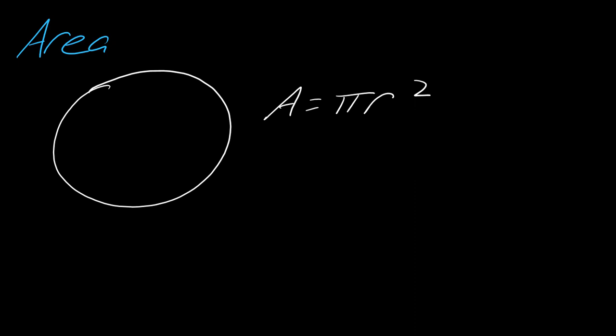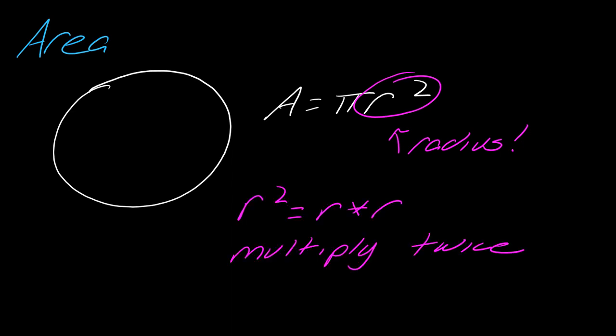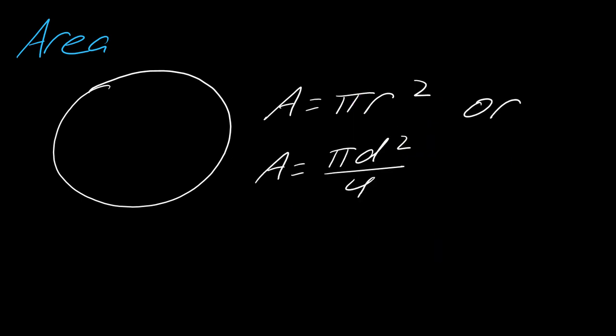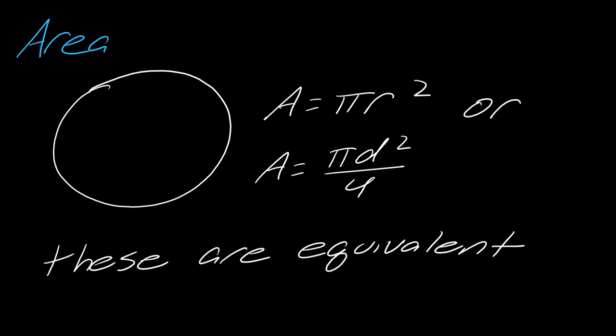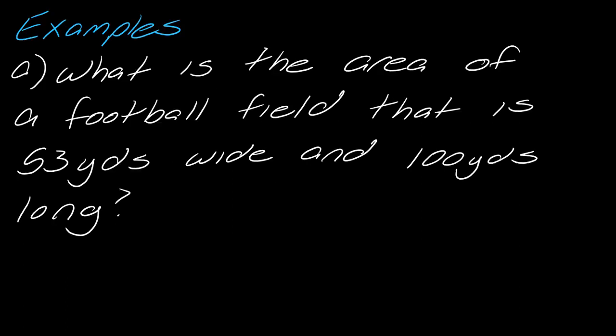The area of a circle also uses pi. The formula is a equals pi·r squared, where r squared means r times r. There's also an alternative formula using diameter: a equals pi·d squared divided by four. These two formulas are equivalent — that's why we divide by four when using diameter. Don't forget your squared units.